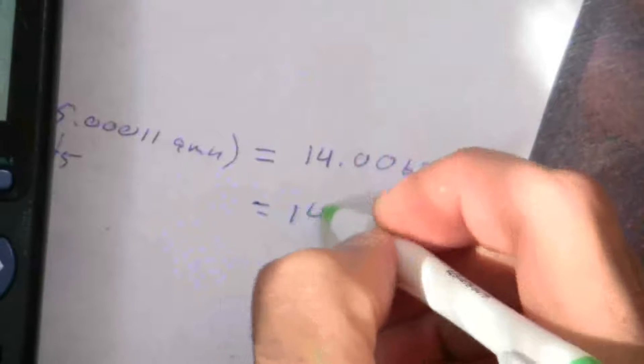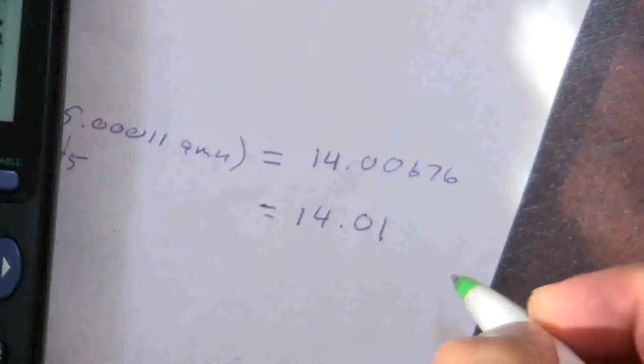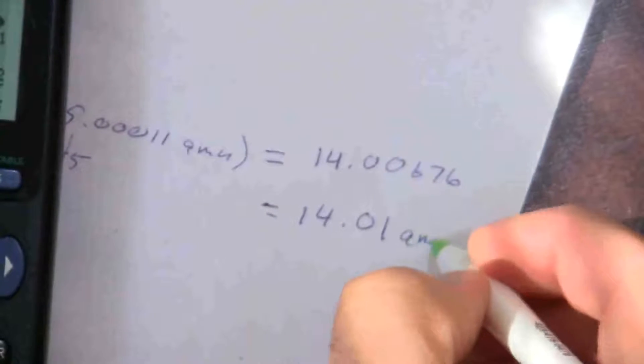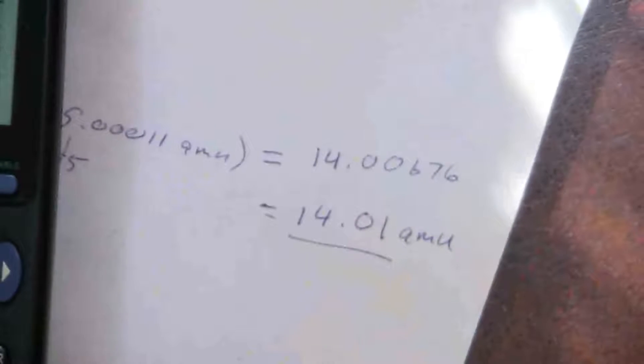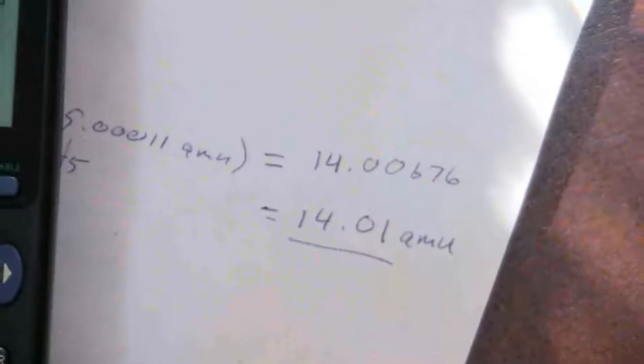So I would get this to 14.01 amu, and this is the atomic mass of nitrogen that you see on the periodic table.